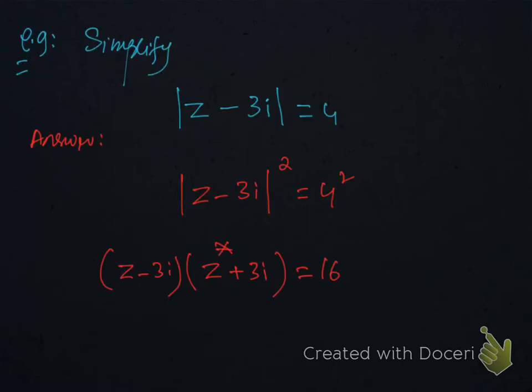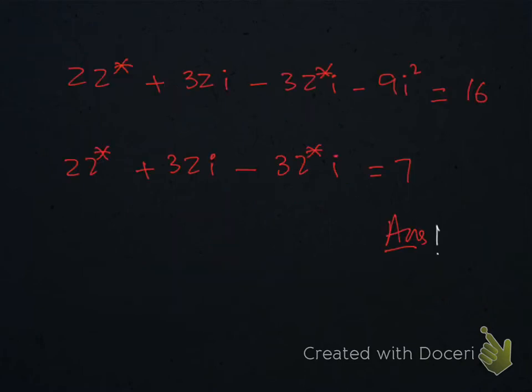Let's discuss this example z minus 3i equals 4. To remove modulus first we need to square on both sides. And then we need to copy z minus 3i here. And then we write opposite of z minus 3i in the other bracket, which is z star plus 3i. Make sure you write z star in the next bracket and you should write a positive sign, the opposite sign of this negative here. And this is the simplified form of both the brackets.